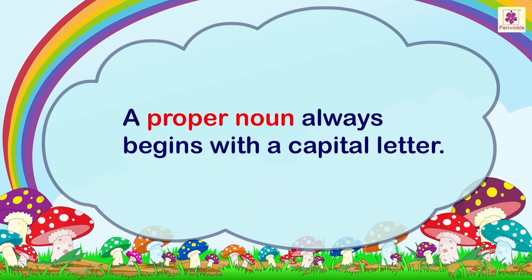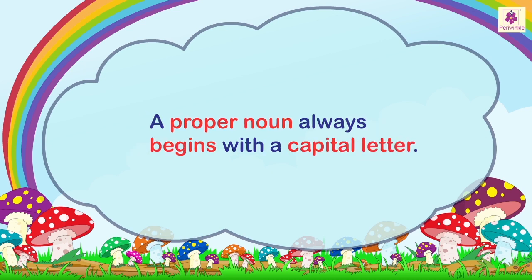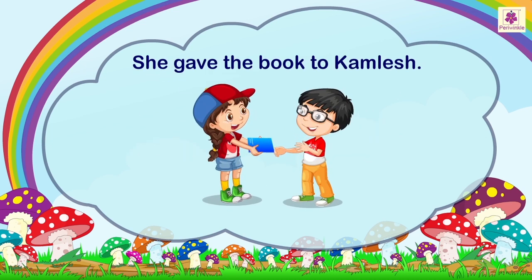A proper noun always begins with a capital letter. For example: 'She gave the book to Kamlesh.' Here, the word 'Kamlesh' is a proper noun as it is the name of a person.